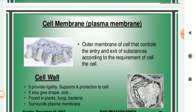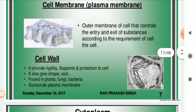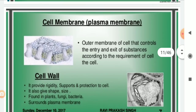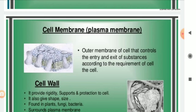In addition to this, plant cells have one more membrane called the cell wall. This cell wall is present only in the plant cell and is absent in the animal cell. It provides rigidity — meaning hardness — support, and protection to the cell. It also gives shape and size and is found in plants, fungi, and bacteria. It surrounds the plasma membrane and supports the plant cell since plant cells do not have a skeleton for support.